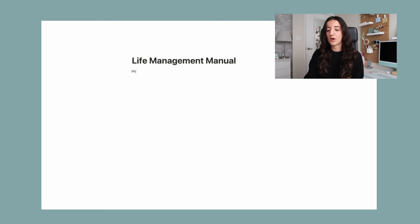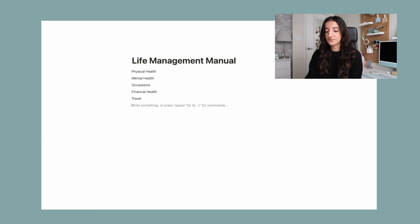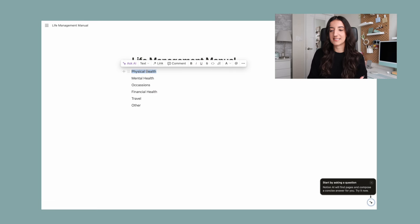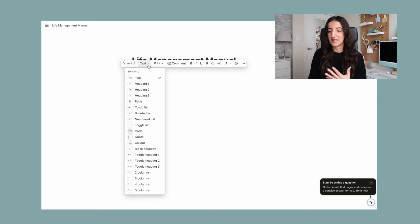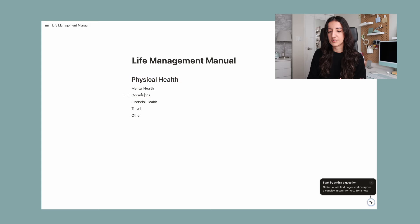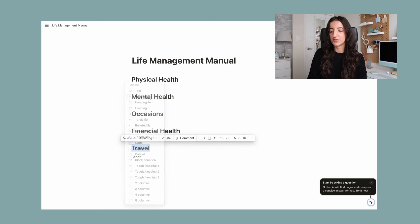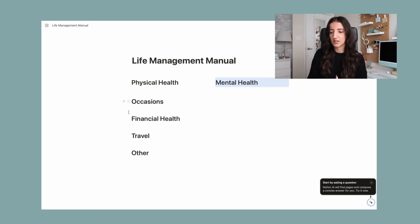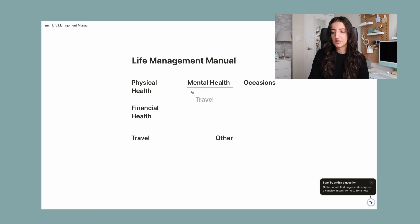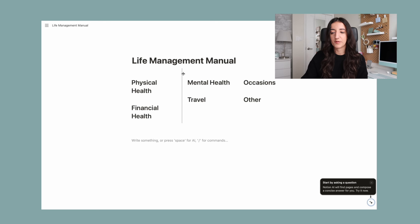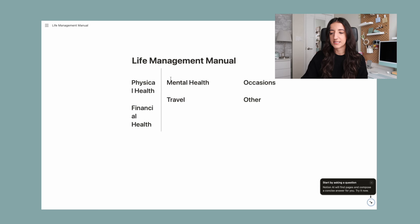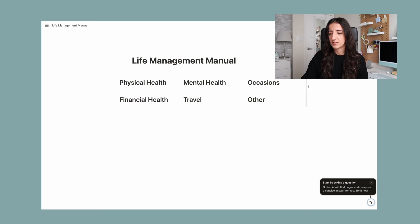I'm going to get started with some categories. I know I'm going to want spots to keep track of my physical health, my mental health, occasions, my financial health, travel, and another category. Keep in mind throughout this whole process that this is a starting point — you can expand and customize based on your needs. I'm going to make all these heading one. I also want these in columns, so I'll arrange them accordingly. I can make each column bigger or smaller by just moving my cursor and this gray line will appear.